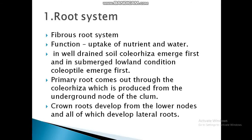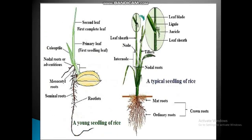The coleoptile covers and protects the plumule, and the coleorhiza covers and protects the radicle. Primary roots come out through the coleorhiza, which is produced from the underground node. Crown roots develop from the lower nodes, and all of these develop lateral roots. You can see this in the figure.